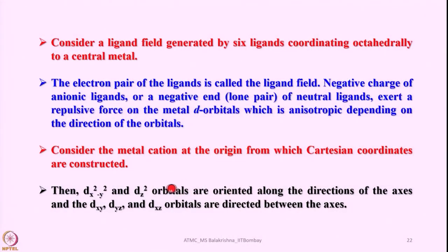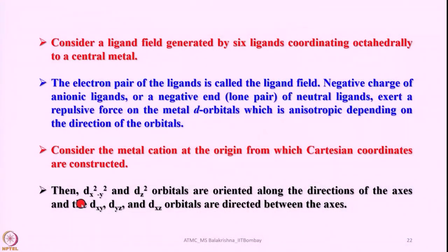When you analyze their relative orientation and the direction of approach of the ligands — after placing the metal atom at the Cartesian coordinate origin, bring 6 ligands in an octahedral fashion. In an octahedral geometry with the metal at the origin, the direction of approach of ligands coincides with the ±z, ±x, and ±y directions. Looking at dx²-y² and dz², these are oriented along the direction of the axes.